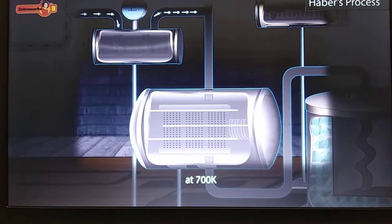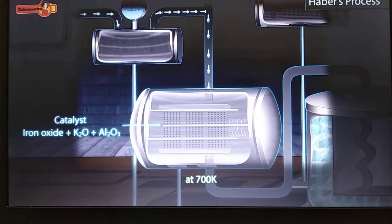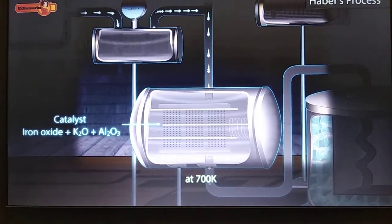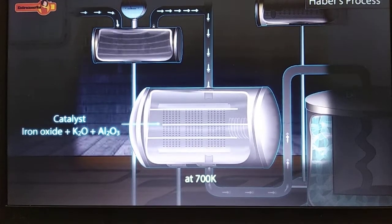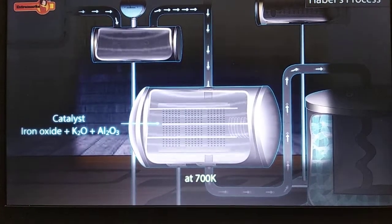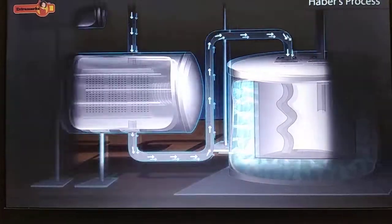These highly compressed gases are then sent to the catalytic chamber, which contains iron oxide along with small amounts of potassium oxide and aluminium oxide to speed up the reaction.